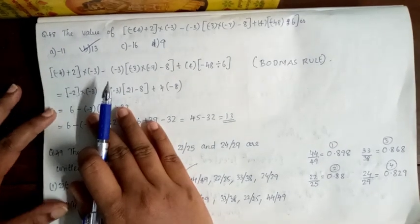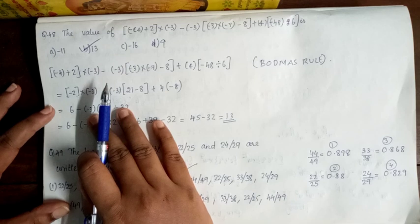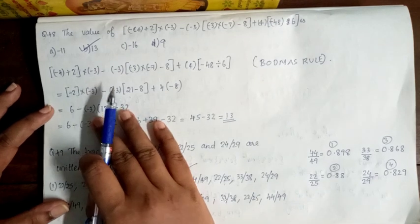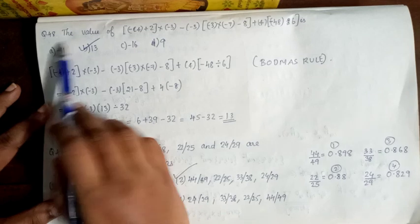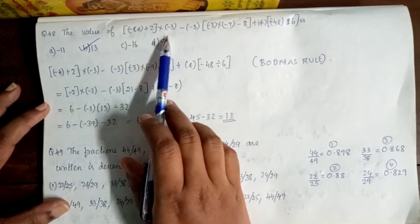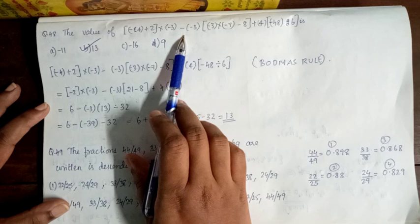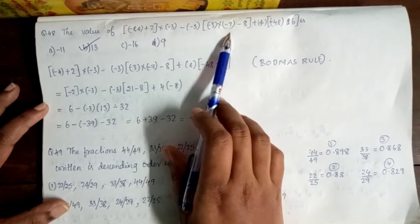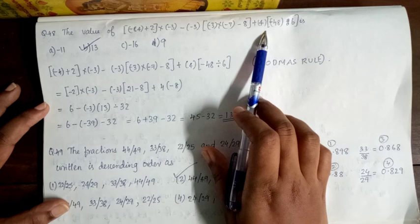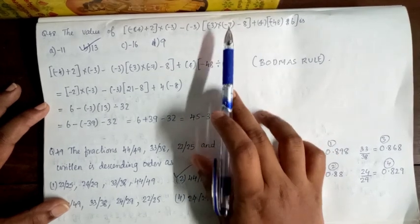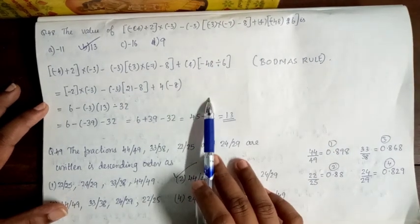Hi everyone, welcome to One Stop Mathematical Solution. This is the Seated Question, Question 48. The value of minus 4 plus 2 into minus 3, minus minus 3 into minus 7 minus 8, plus 4 into minus 48 divided by 6. This is the BODMAS rule.